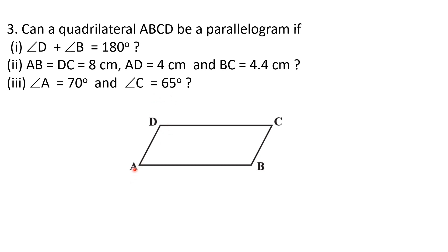For reference, when we name a quadrilateral or parallelogram ABCD, we must follow either the clockwise or the anticlockwise direction consistently. We cannot write the vertices out of order — that is wrong. If you go in the anticlockwise direction, keep going anticlockwise; if clockwise, keep going clockwise until you return to the initial position.